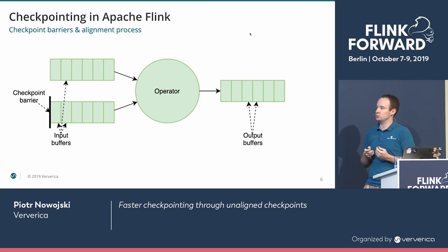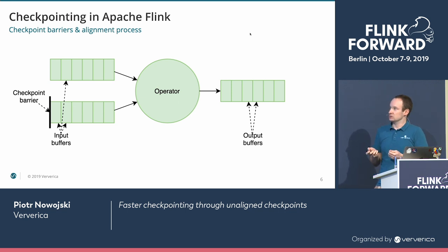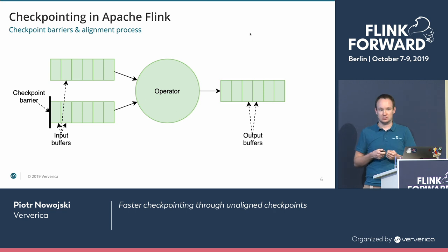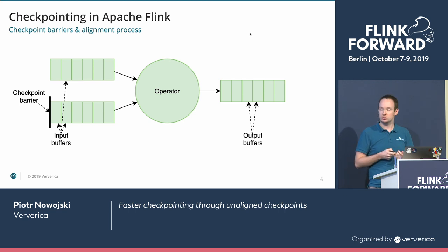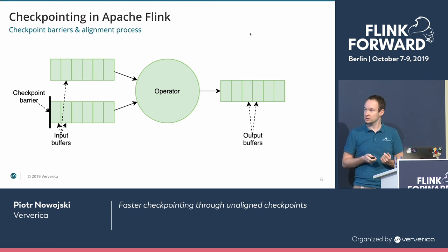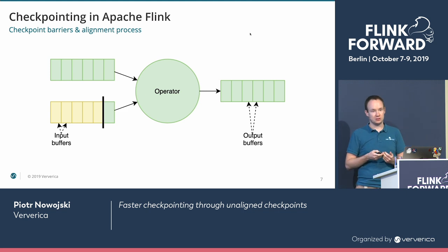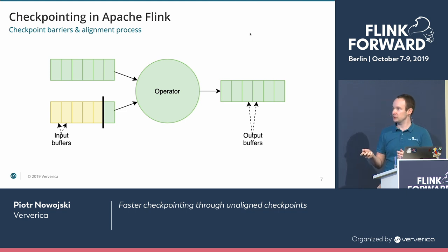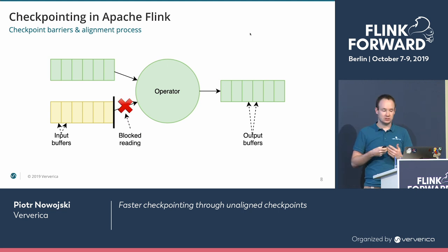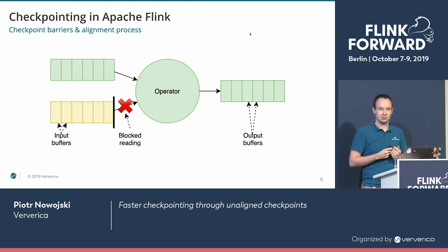Here we have an example of an operator with two input channels and one output channel, represented from the perspective of the Task Manager. The input and output channels are basically buffers — Flink buffers some data for performance reasons. Let's say the network stack received a checkpoint barrier from the second channel. At this point we cannot do anything; we just enqueue the checkpoint barrier at the tail of the input buffer queue, and the operator must keep processing records from the input buffers. As the checkpoint barrier traverses toward the head of the input queue, we still can't perform the checkpoint, because we haven't yet received the checkpoint barrier from the first input channel.